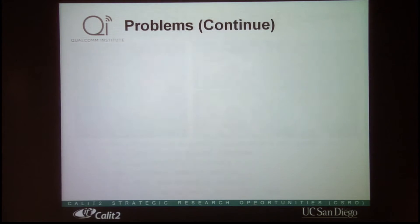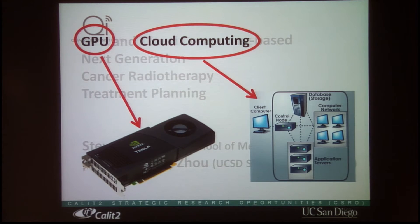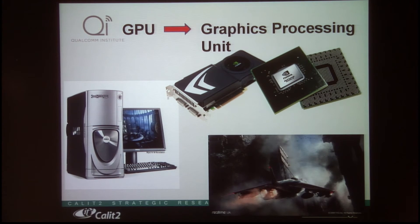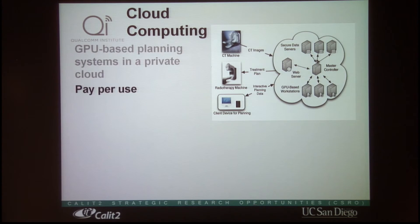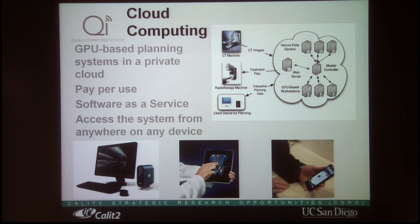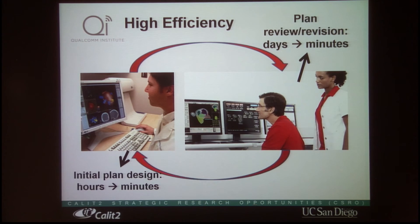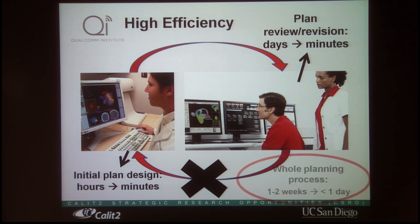To improve the situation, we applied two types of technology to the problem. One is the GPU — the graphics processing unit, like in Xbox or PlayStation game machines. The other is cloud computing. With the GPU, we can really accelerate the computation, potentially producing a treatment plan in just a few minutes. With cloud computing, you can share data and experience, do data mining, and recommend to physicians successful treatments based on previous patients with similar body shapes and health conditions. Our goal is to speed up the process and provide automatic recommendations.